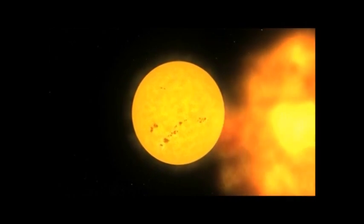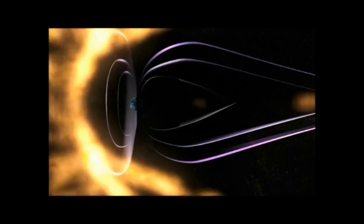Coronal mass ejections are happening on the Sun all the time, and they hit the Earth once or twice a week, sometimes more. In general, the effects are minimal.